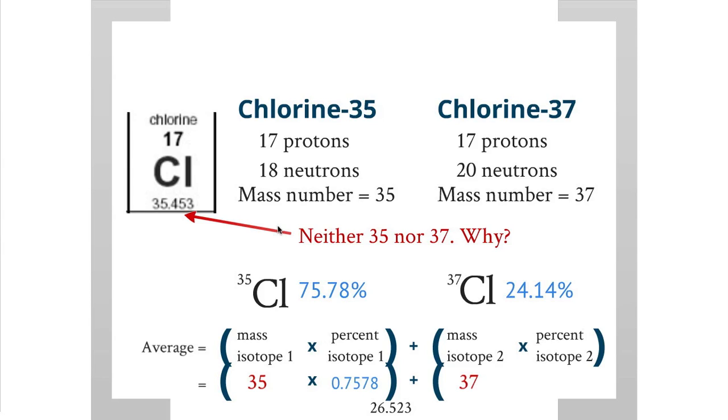We're going to add the mass of isotope 2, that's 37, multiplied by the percent of isotope 2. Turning 24.14 percent into a decimal, we multiply by 0.2414 and we get 8.9318. So we add those two together: 26.523 plus 8.9318, and we get the average atomic mass of 35.454.